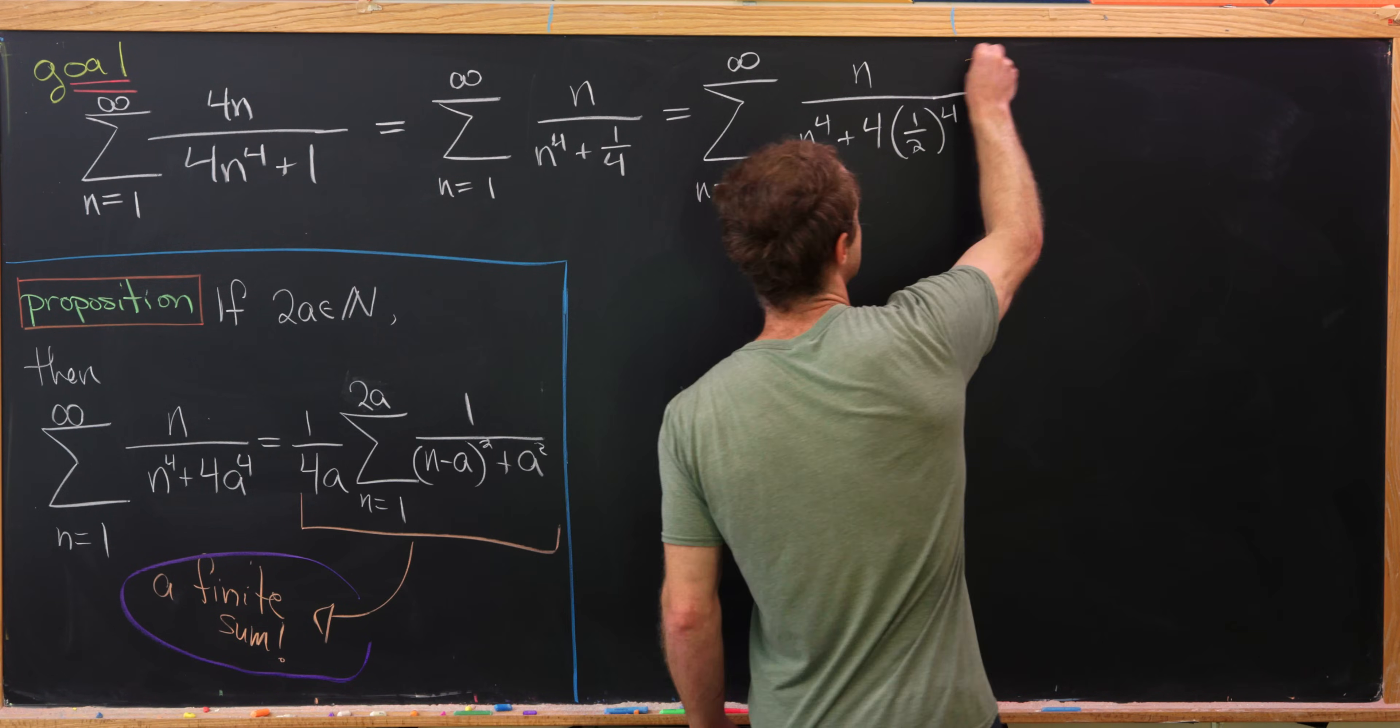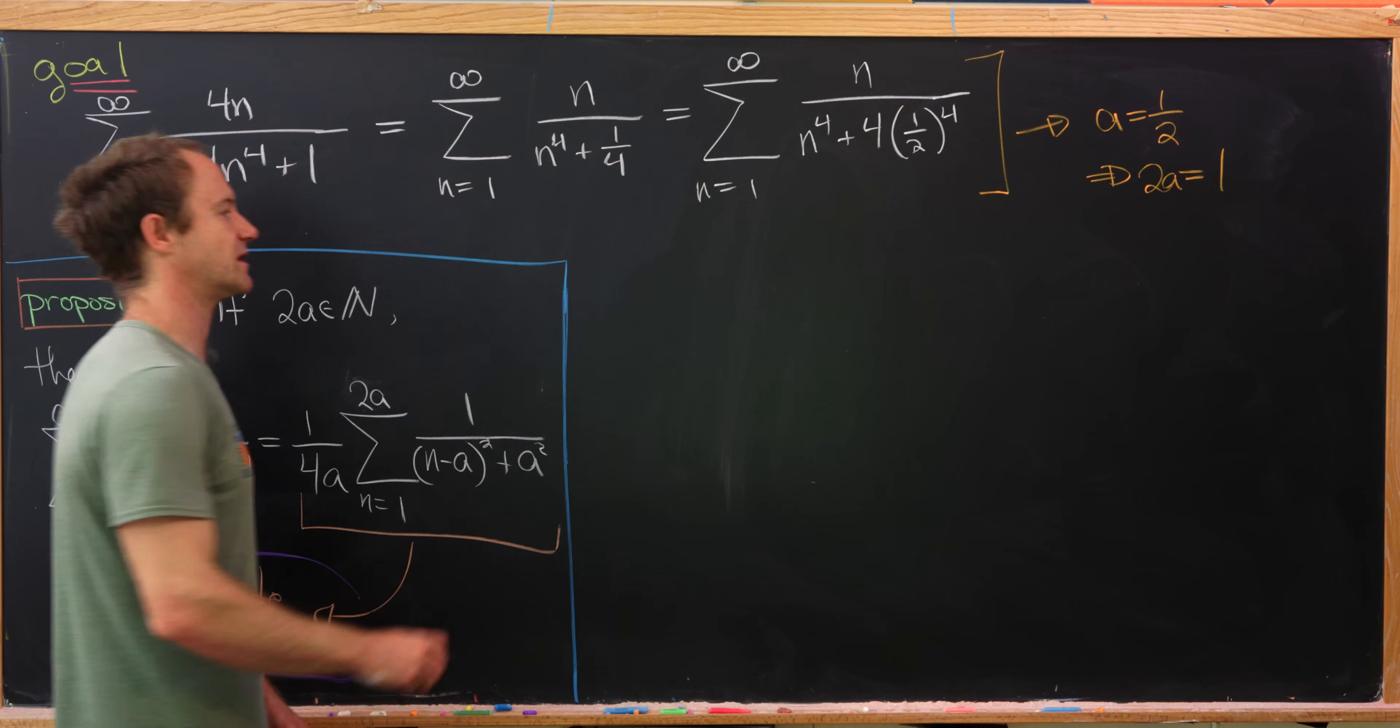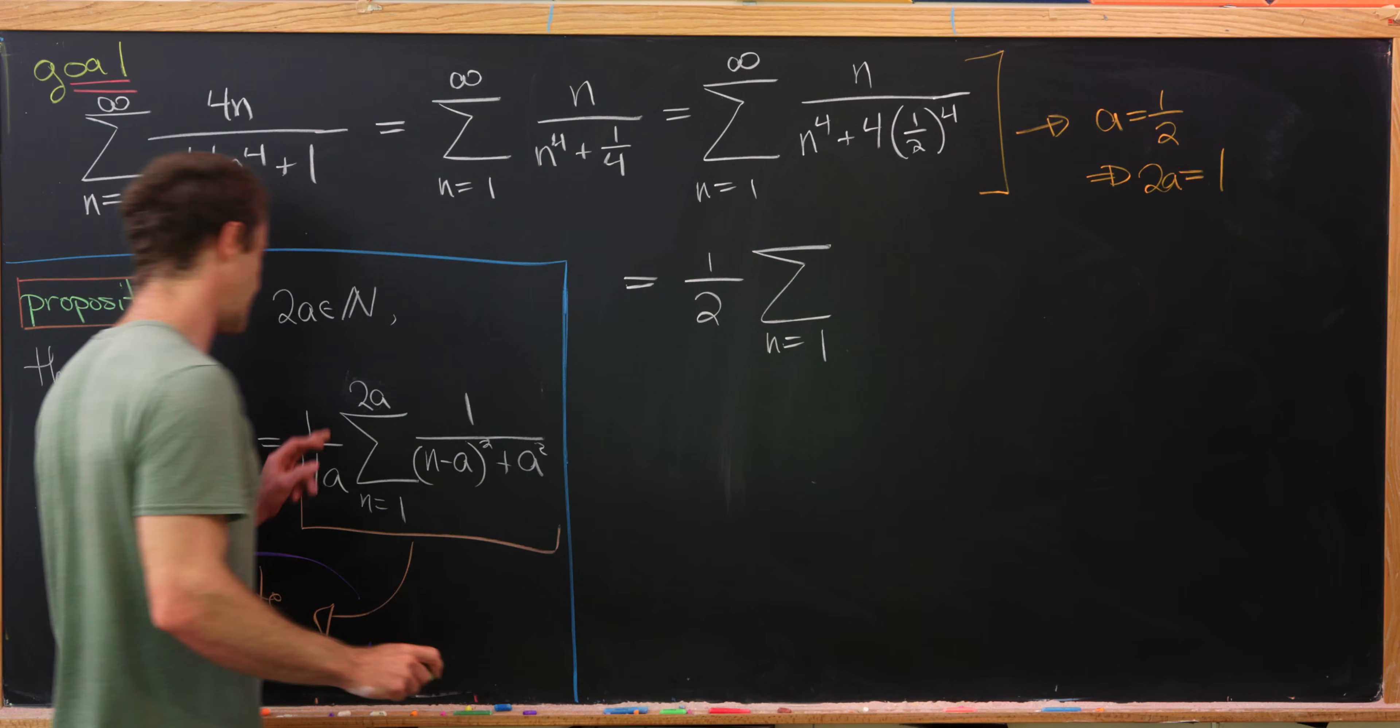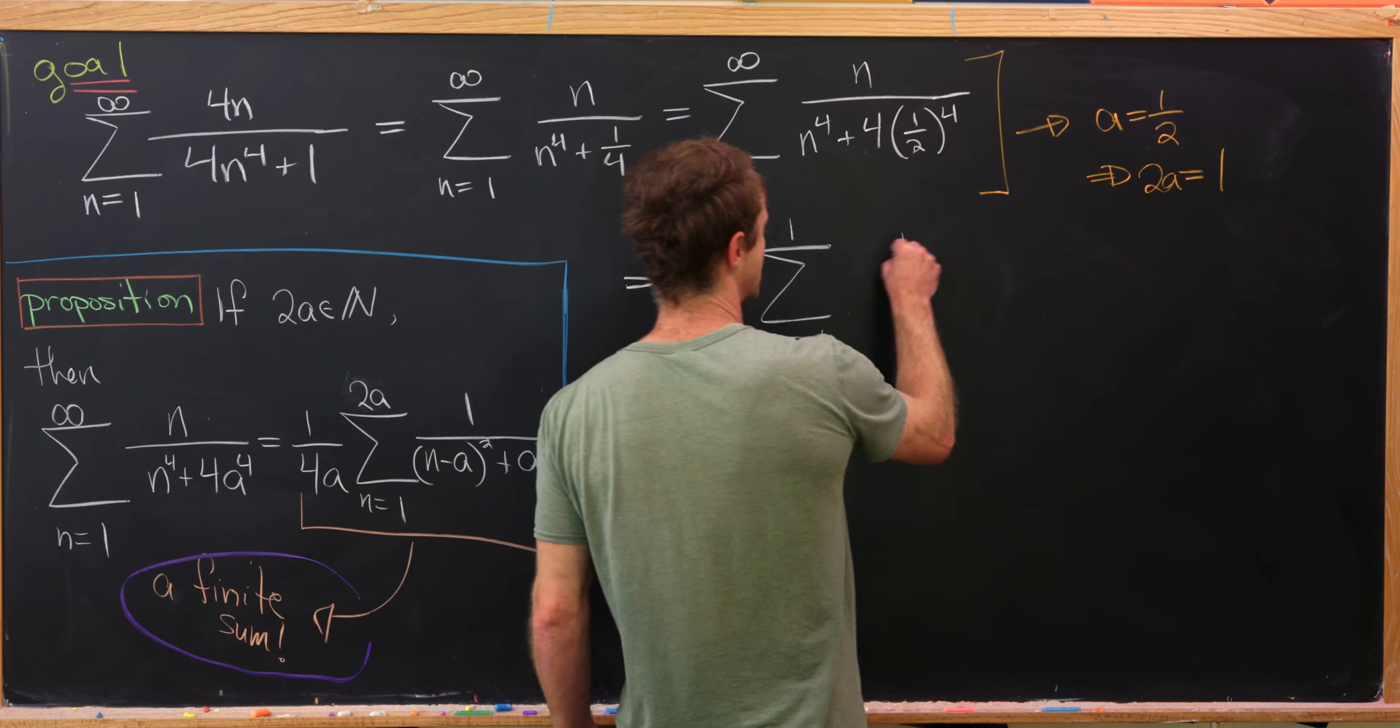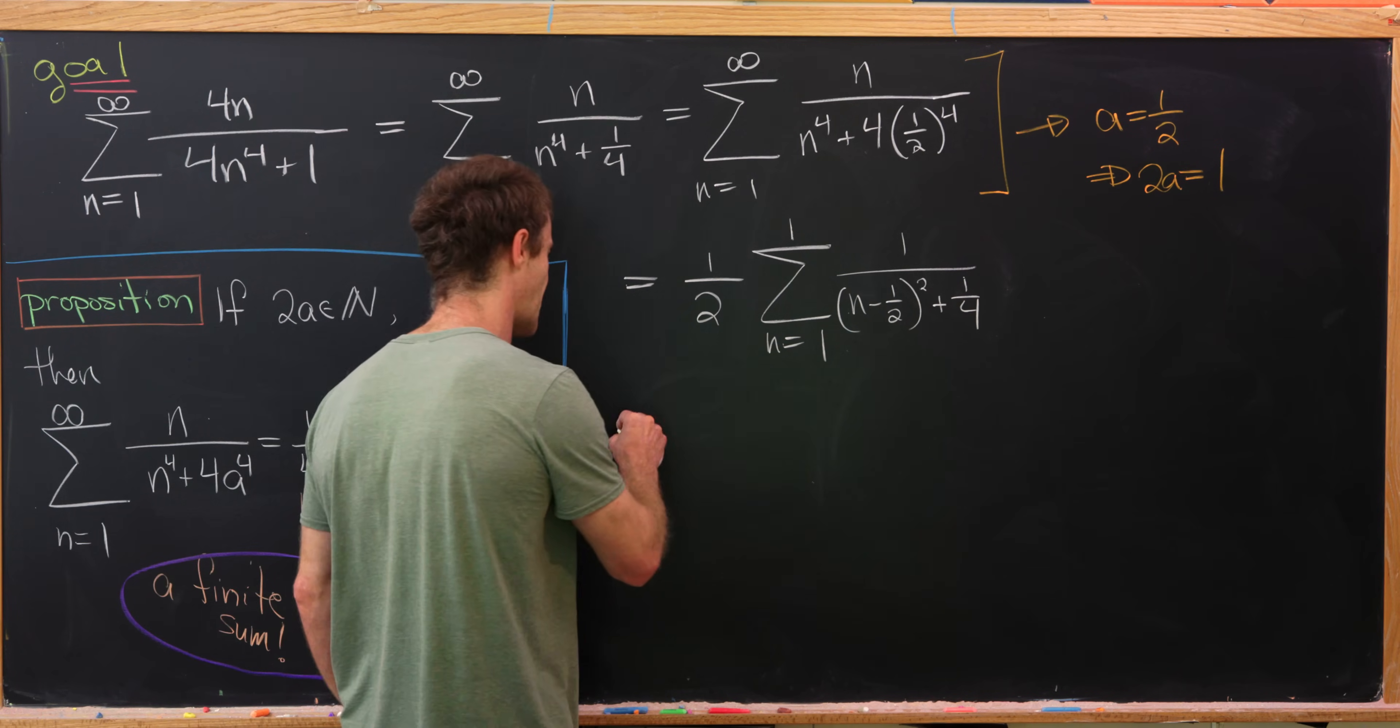So now let's notice that this setup here is exactly our proposition with a equal to 1 half. But if a is equal to 1 half, then 2a is equal to 1. But that's the upper bound of our summation here. So now we're ready to finish this thing off. So this will be 1 over 4 times a. 4 times a is 2. So this is going to be 1 over 2. And then the sum n equals 1 to 2 times a. Well, that's just the sum from n equaled 1 to 1 of. Well, now it'll be this object right here where a is equal to 1 half. So 1 over n minus half quantity squared plus 1 half squared, which is 1 quarter. So something like that. But the sum as n goes from 1 to 1 is essentially just what we get when we plug in n equals 1. So let's do that, and we'll have our final answer.